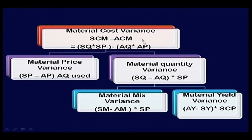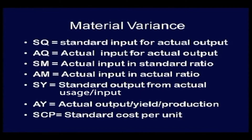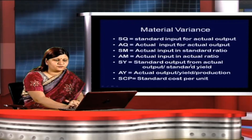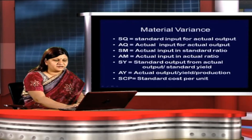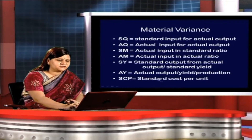The key terminologies used are: SQ = standard input for actual output; AQ = actual input for actual output; SM = actual input in standard ratio (revised standard mix); AM = actual input in actual ratio — these are used when mix variances are computed. SY = standard output from actual input (standard yield); AY = actual yield or actual output or production; SCP = standard cost per unit.